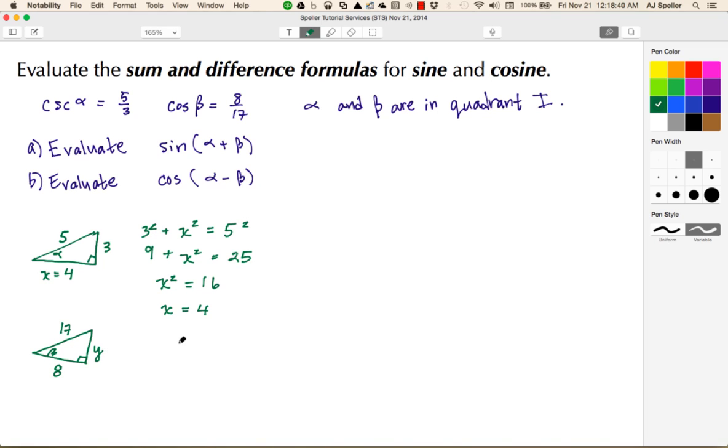Here we have 8 squared plus y squared equals 17 squared. That's 64 plus y squared equals 289. Subtracting 64 from both sides, y squared equals 225. Taking the square root of both sides, y equals 15. So now we have our two completed special triangles.